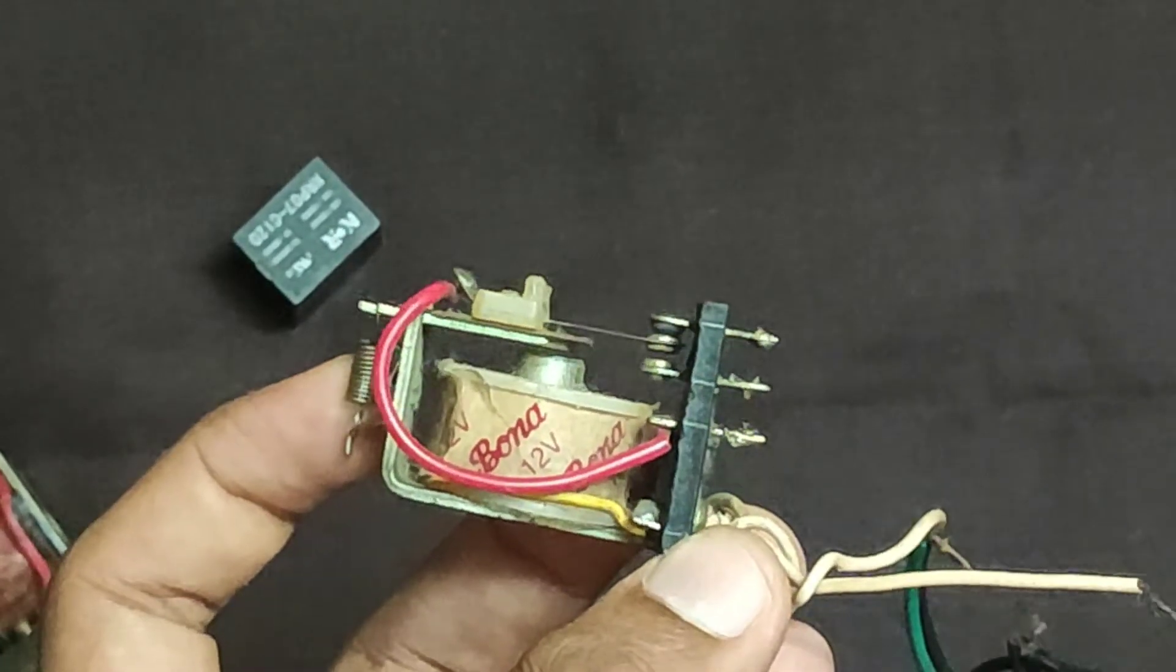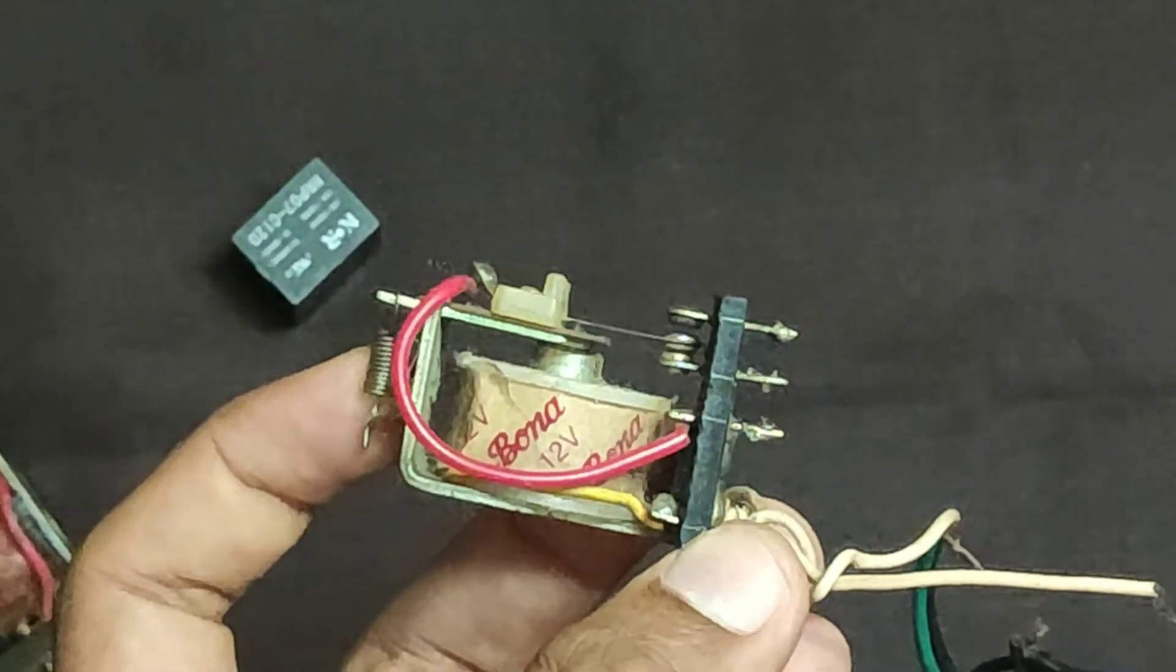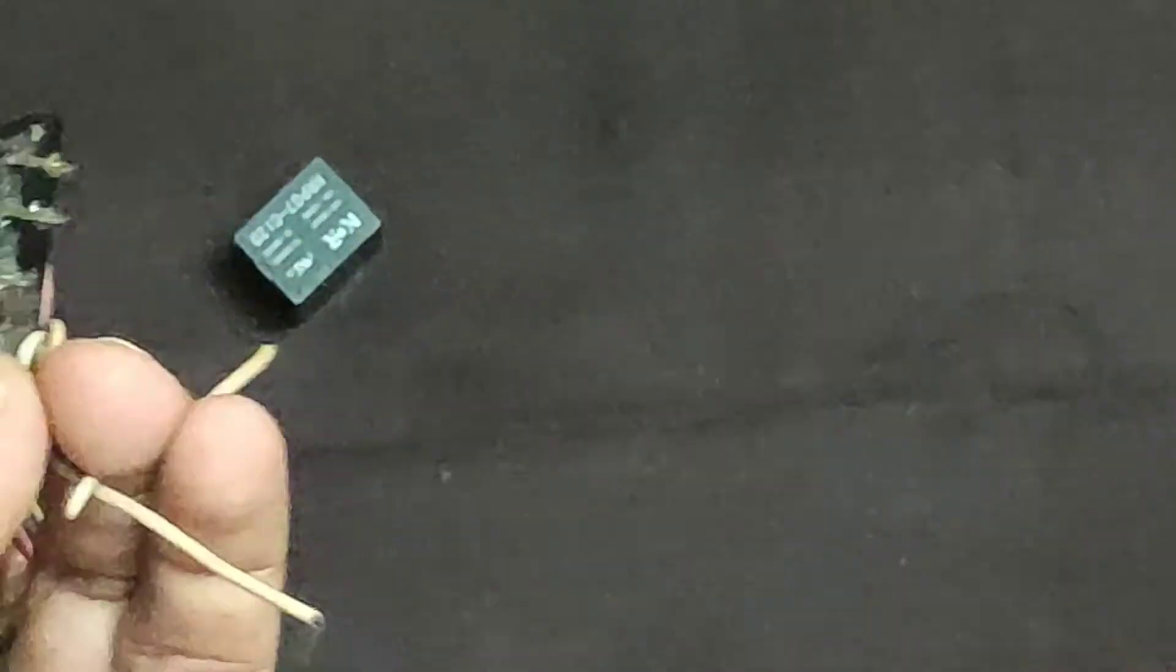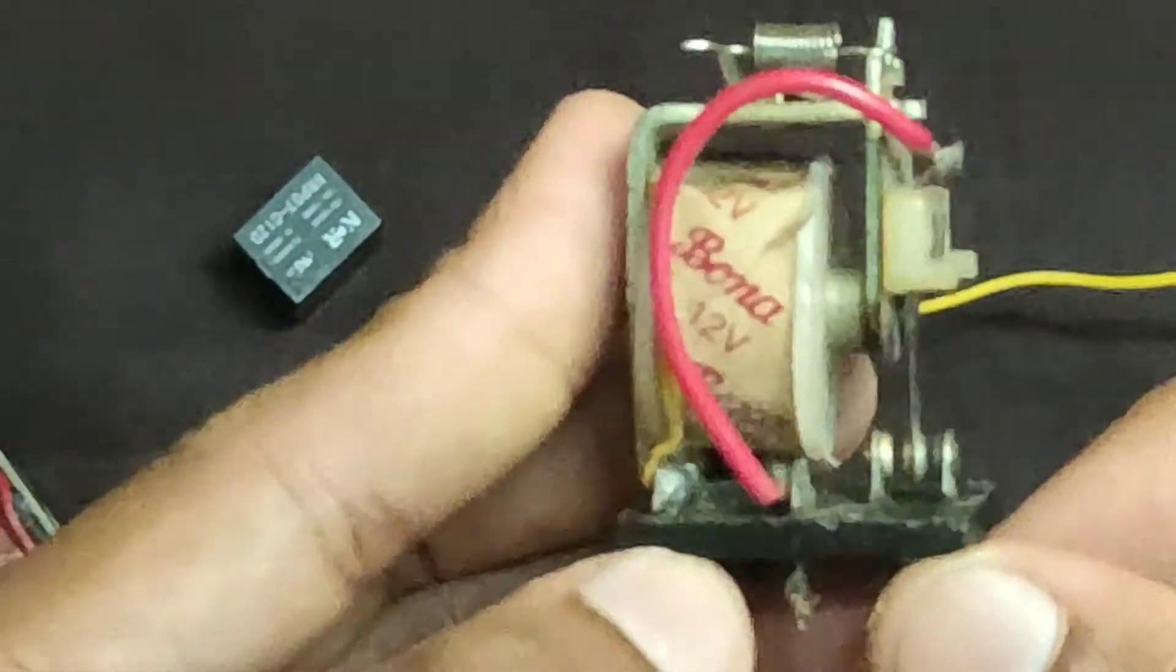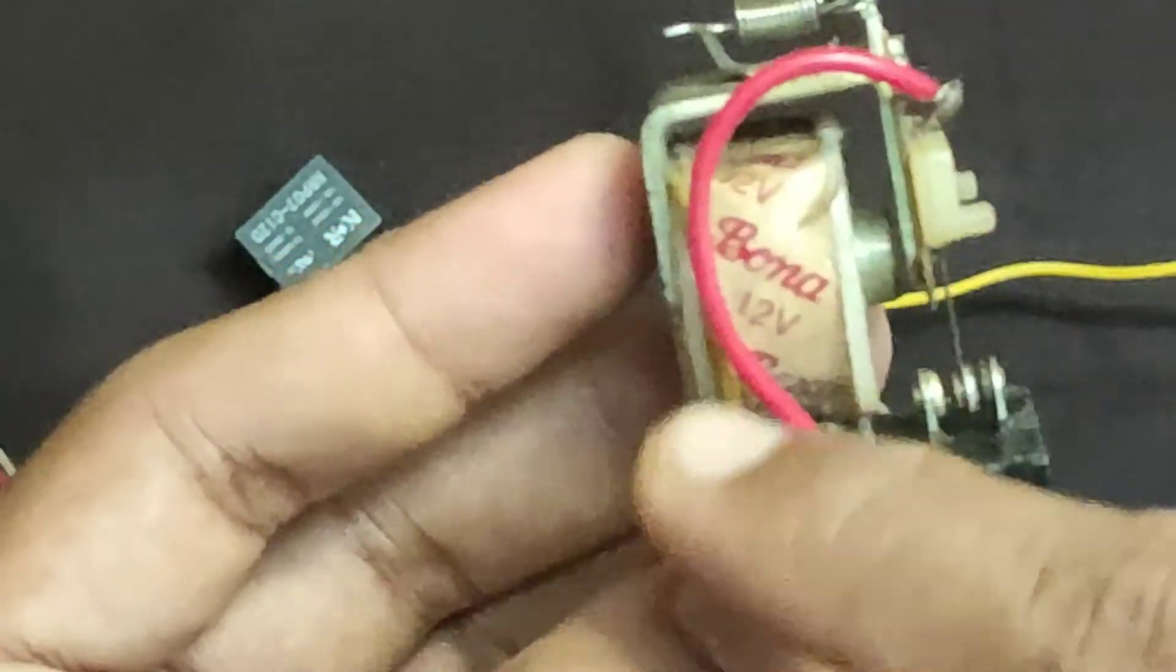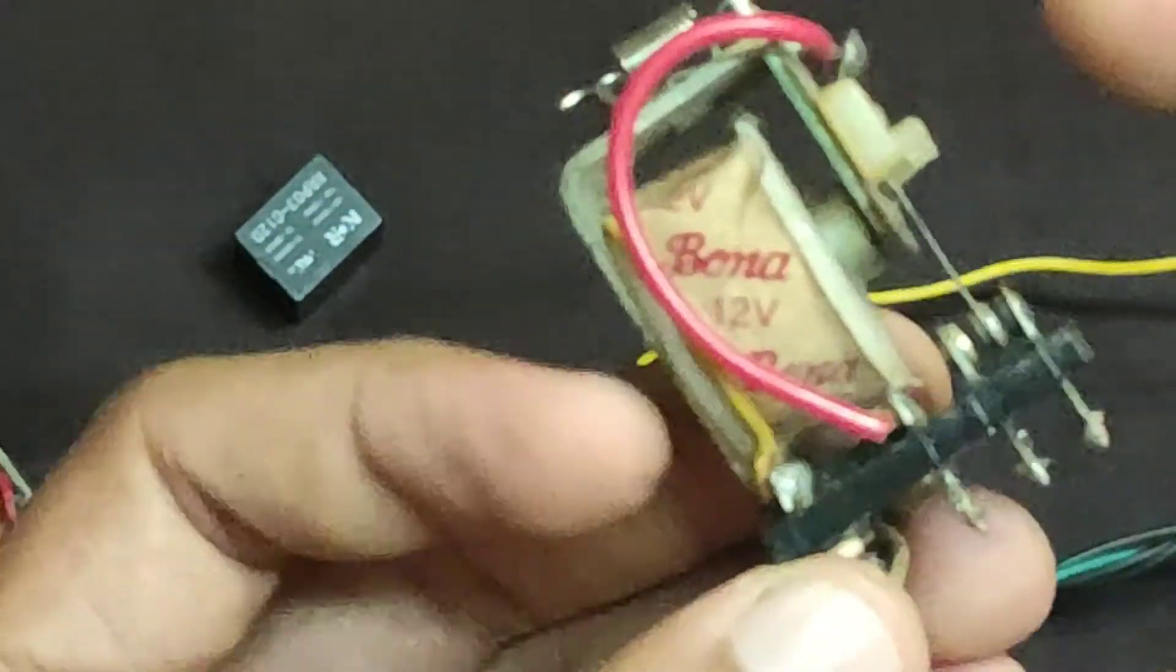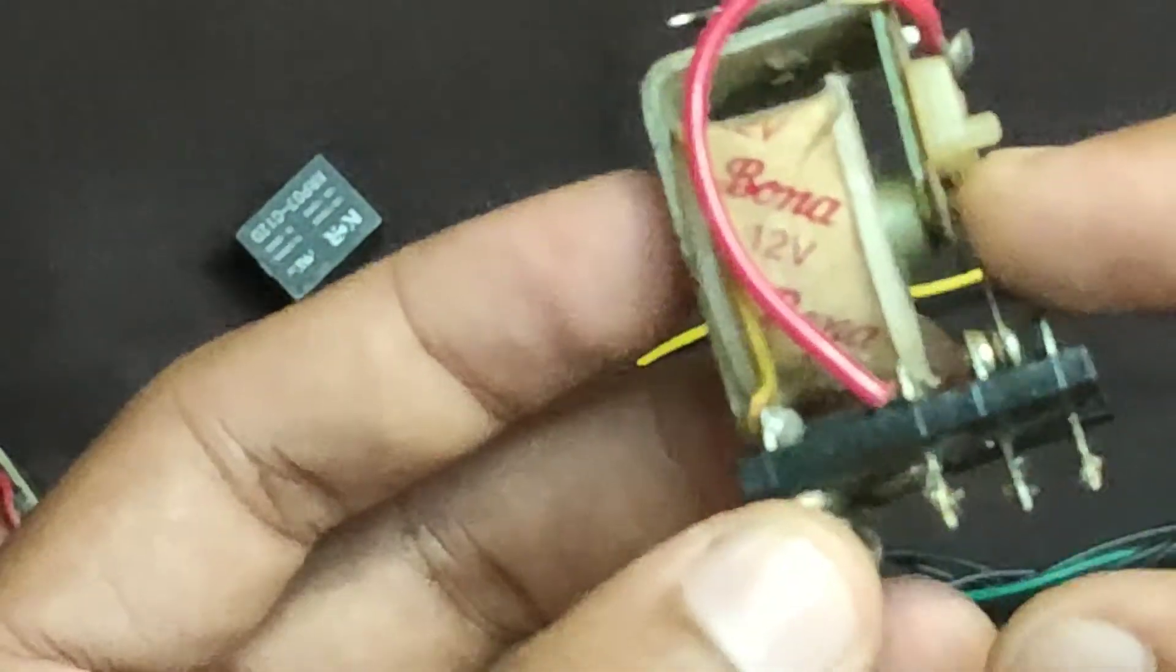But when you apply AC supply to the terminals of the relay, it just fluctuate or vibrate between the two contacts. This contact is normally closed contact, and the other contact is normally opened contact.